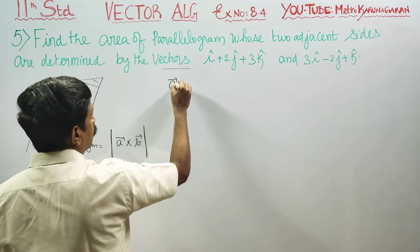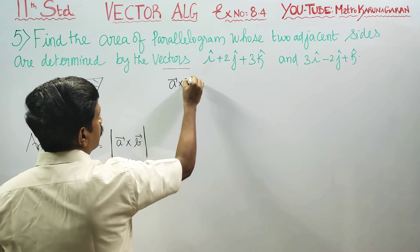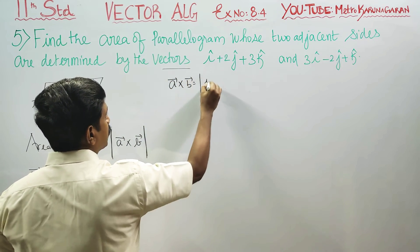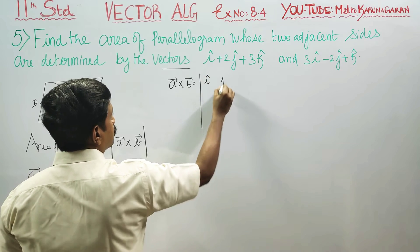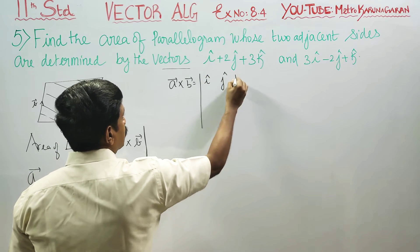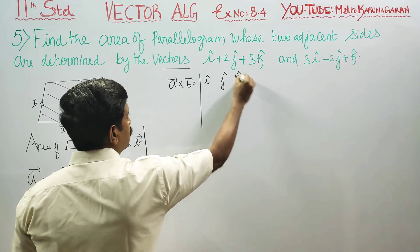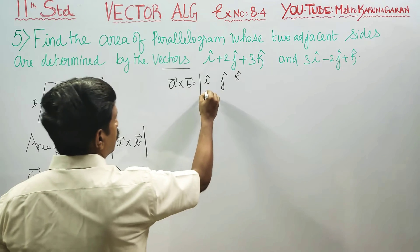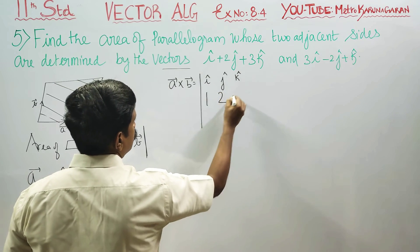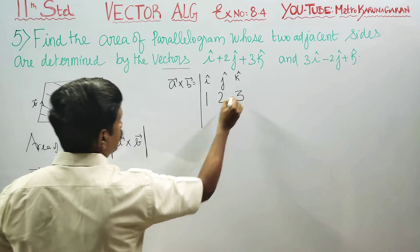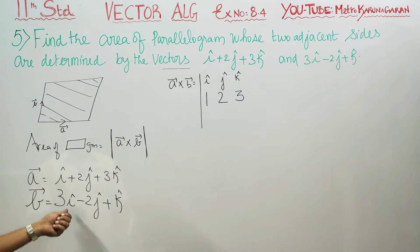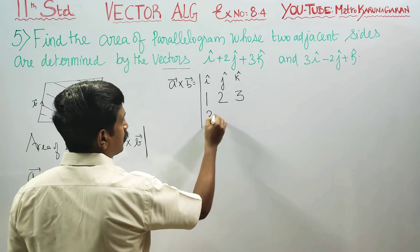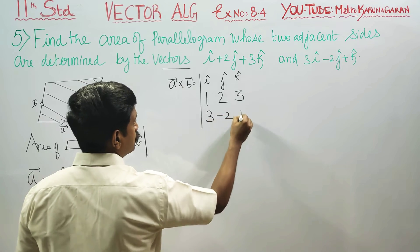A cross B — it is a vector product. We set up the determinant with i, j, k compulsory in the first row. Then A has numbers 1, 2, 3. Then B has numbers 3, minus 2, 1.